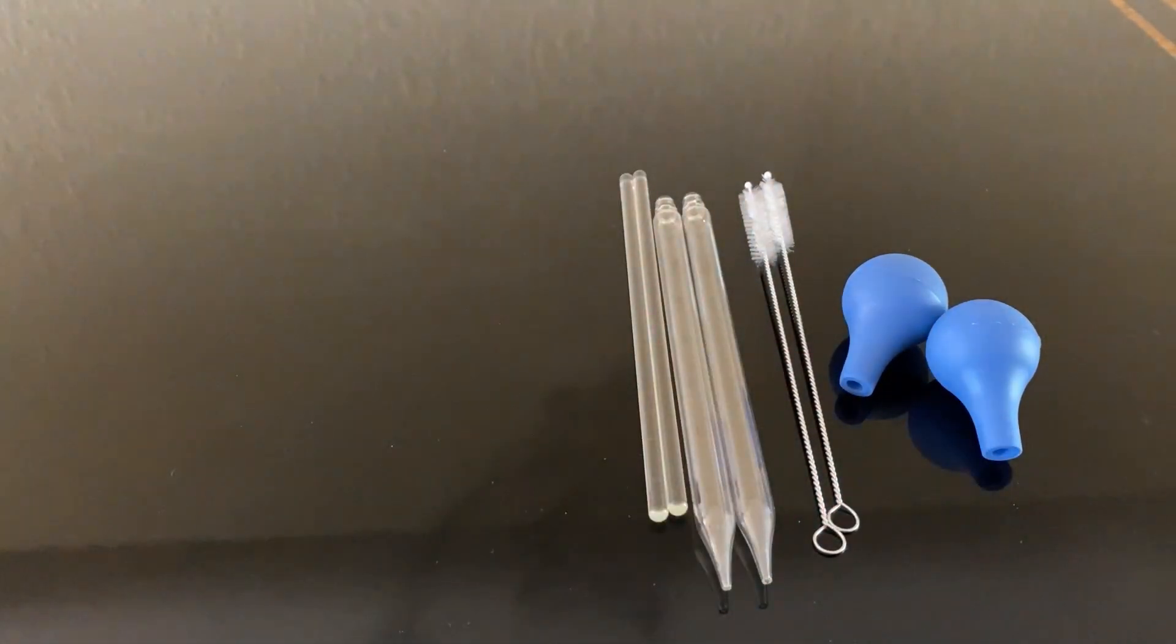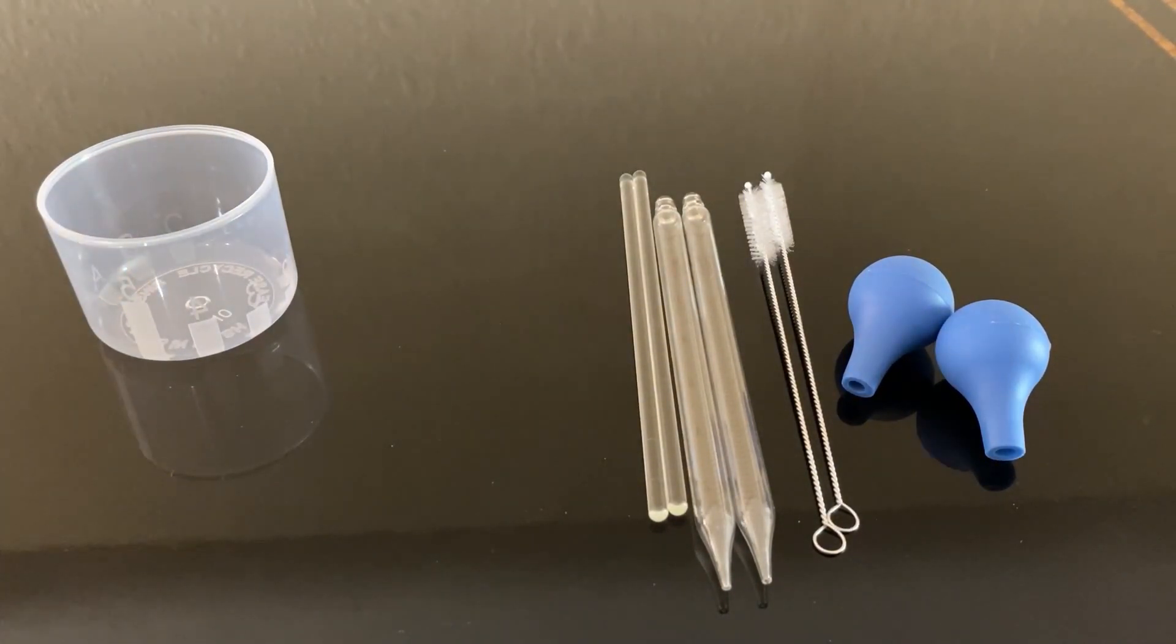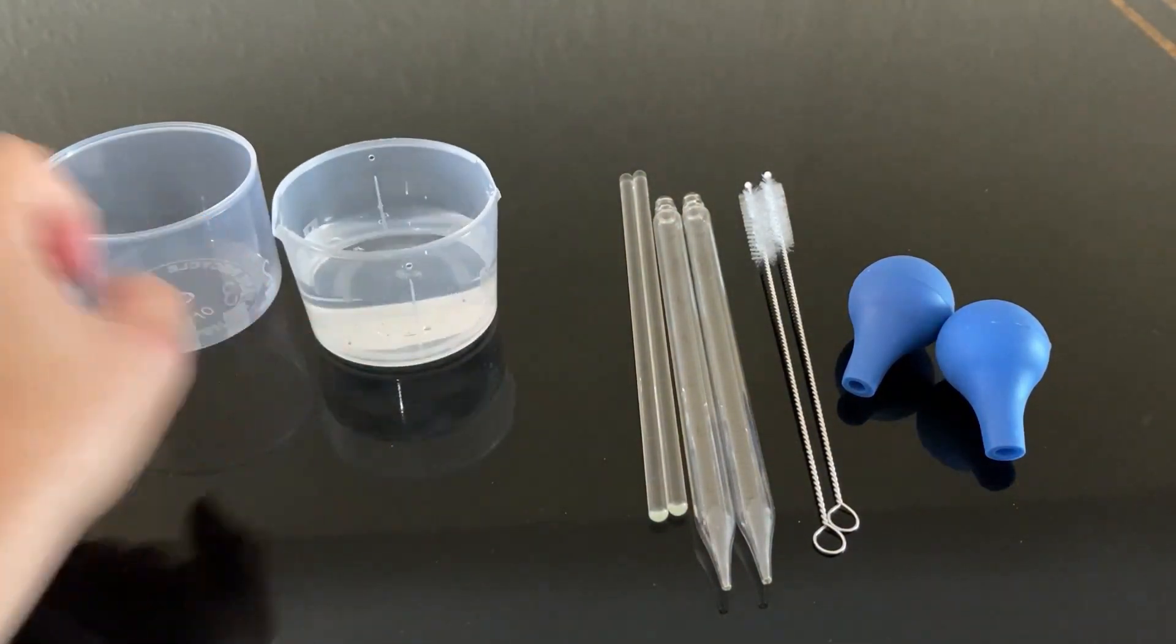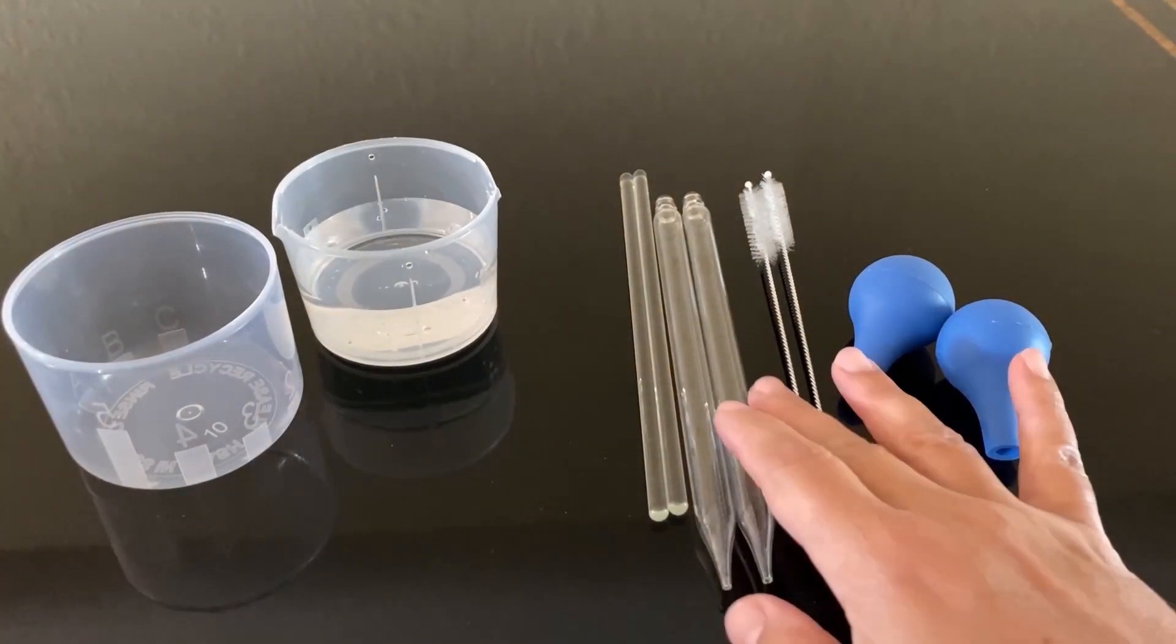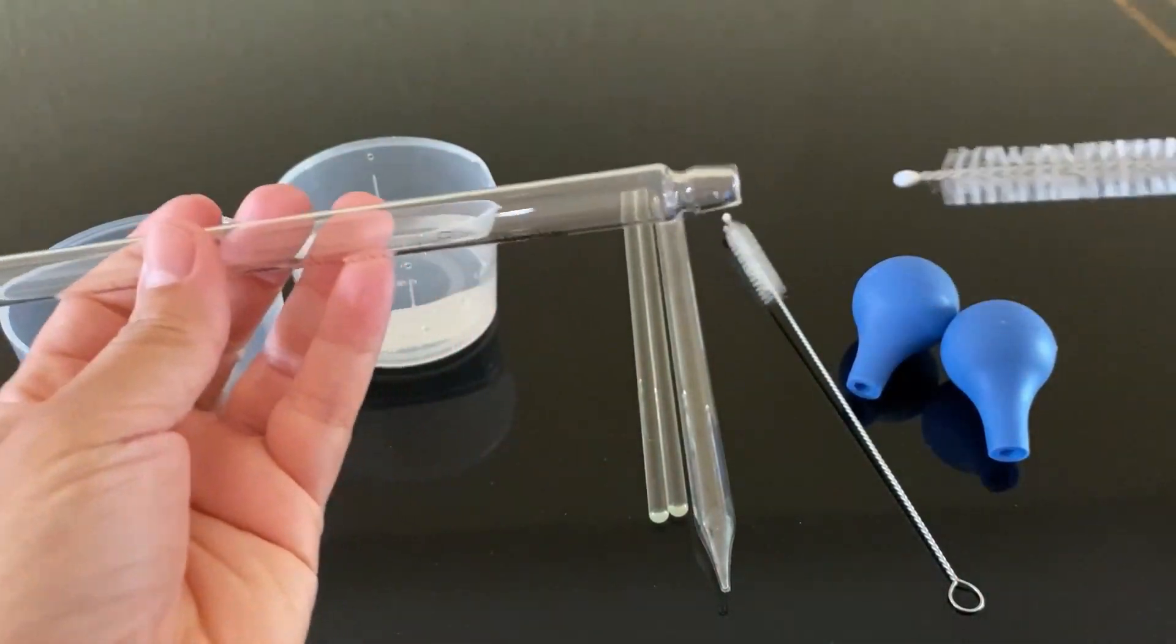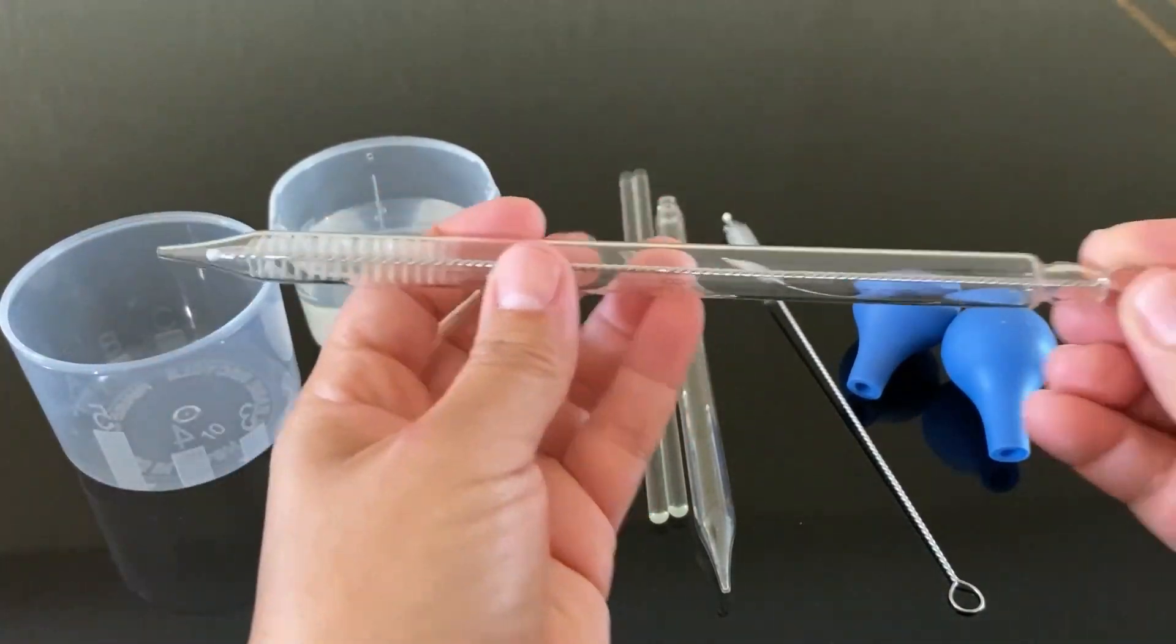Also, the large rubber caps create a tight seal to prevent spills and contamination. The included brush makes cleaning the narrow dropper tubes really easy, as you can see here.